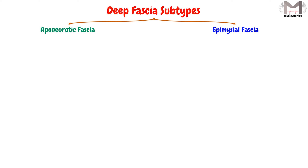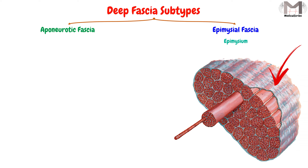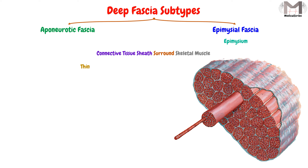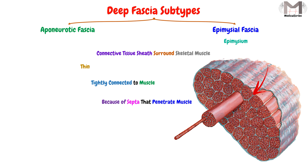The epimysial fascia, sometimes called the epimysium, is the second subtype of the deep fascia. It is a connective tissue sheath that surrounds the skeletal muscle. This subtype is thinner than the aponeurotic fascia and is tightly connected to the muscle, because of the septa which penetrate the muscle layer. These were almost everything regarding the deep fascia subtypes.